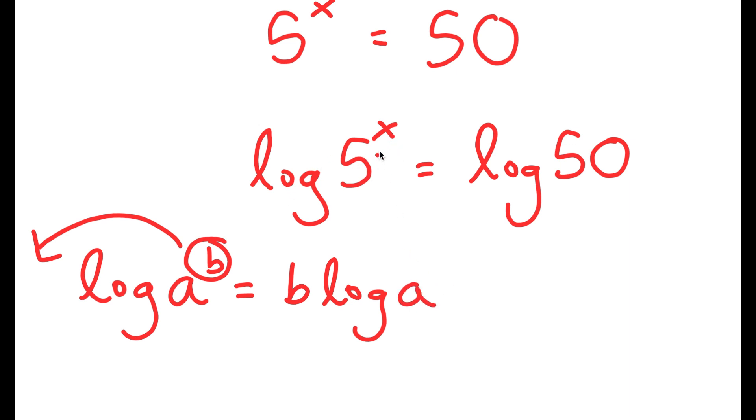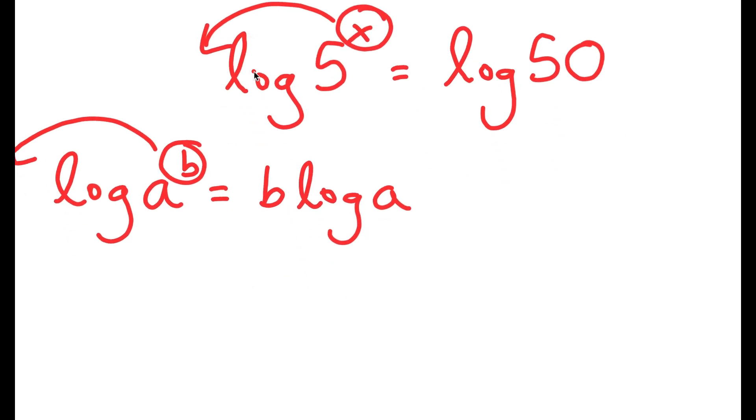So in this case, I have log 5 to the power of x, and we can think of x as b, and I can move this x to the front. So now I get x times log 5 is equal to log 50.